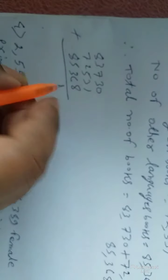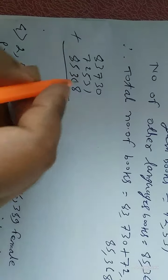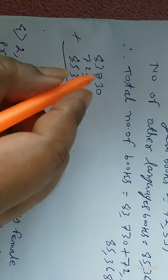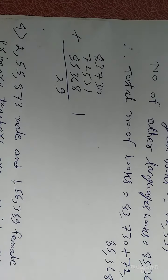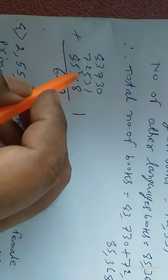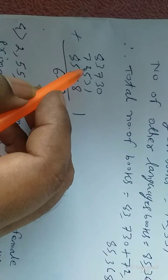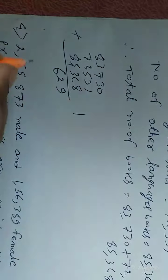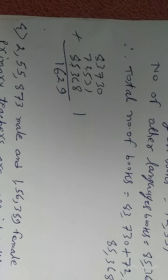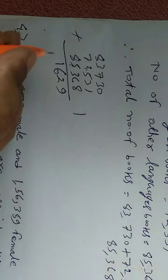First add: 8 plus 1 is equal to 9. 3 plus 3 is equal to 6, plus 6 is equal to 12, carry 1. 7 plus 1 is equal to 8, plus 5 is equal to 13, plus 3 is equal to 16, carry 1. 3 plus 2 is equal to 5, plus 5 is equal to 10, plus 1 is equal to 11, carry 1. 8 plus 8 is equal to 16, plus 7 is equal to 23, plus 1 is equal to 24.